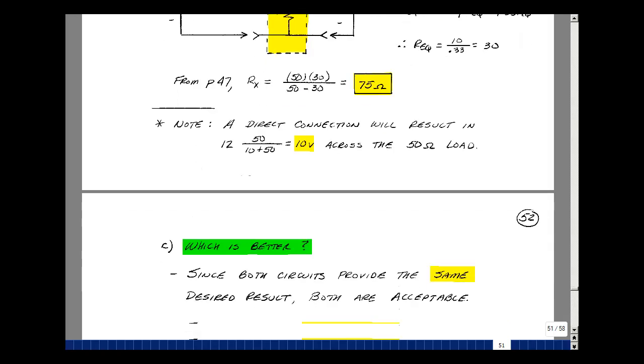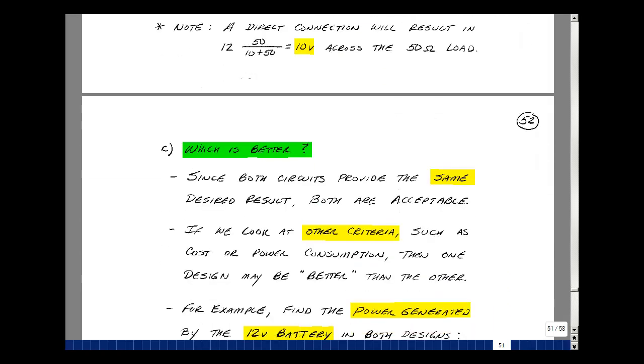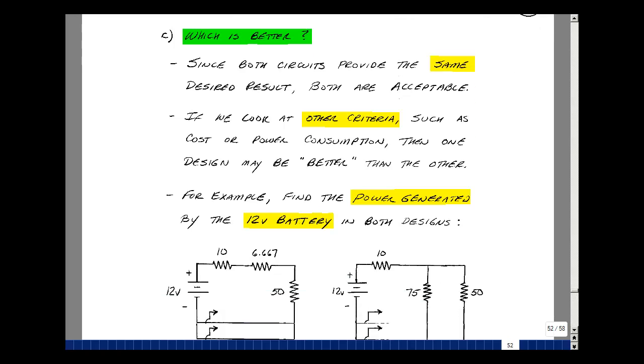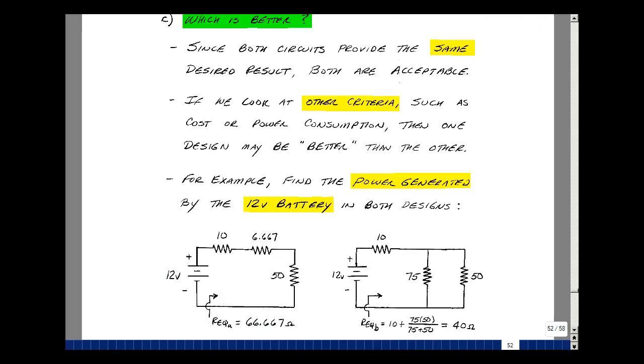Now which design is better? Since both circuits produce the same result, they're both acceptable. If we introduce some other criteria such as power consumption or cost, then one circuit might be better than another. Let's use the power consumption, see how these two circuits perform if we look at how much power is generated by the battery and then consumed by the circuit.